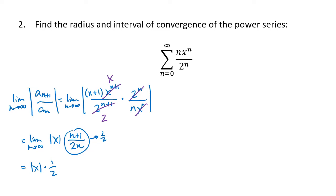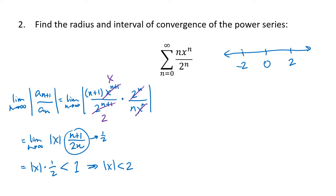For this power series to converge, that result needs to be less than 1, which means the absolute value of x needs to be less than 2. On the number line, our series is centered at 0, and absolute value of x equals 2 at plus or minus 2. So our interval of convergence is between negative 2 and 2, possibly including those endpoints. We can already determine that the radius of convergence is 2 — that's the distance from the center to the endpoints.